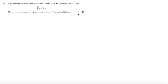In this question we are told to use Simpson's rule with 5 ordinates to find an approximate value for the integral from 0 to π/3 of tan squared x dx. It says to show your working and give your answer correct to 4 decimal places.